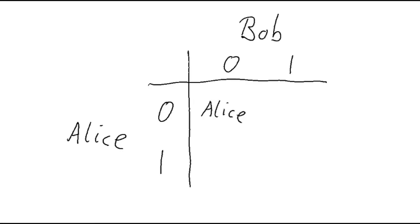So if they both use the same gesture, both choose zero or both choose one, then Alice wins. And if the choices are different, then Bob wins.